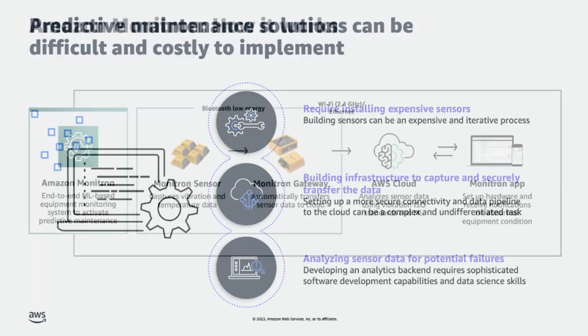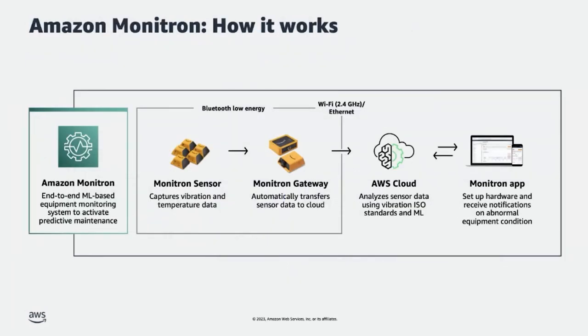Amazon Monitron is an end-to-end system that monitors industrial equipment and detects abnormal conditions in them using machine learning. By doing so, it enables predictive maintenance for your industrial equipment in an easy and cost-effective way, thus helping you reduce unplanned downtime. You can start monitoring rotating equipment like motors, pumps, bearings, and gearboxes in minutes using Amazon Monitron.